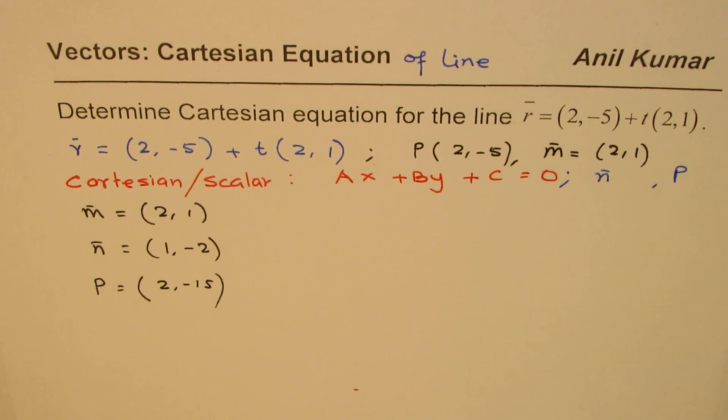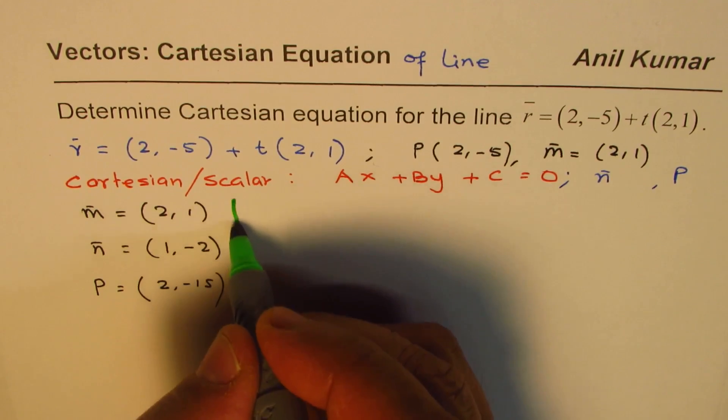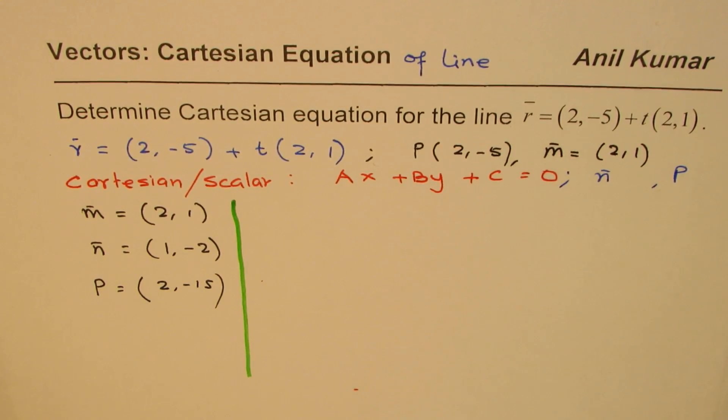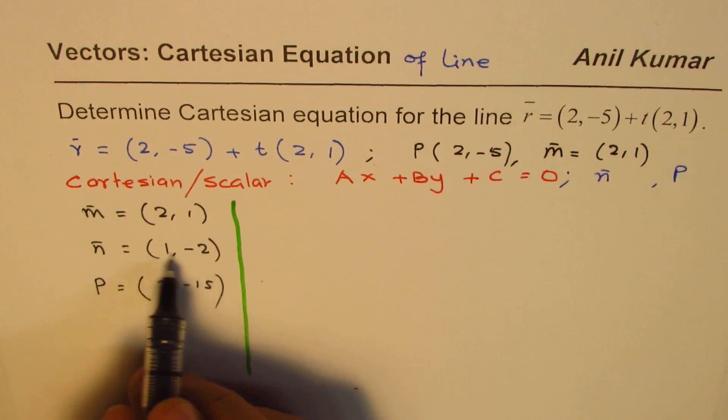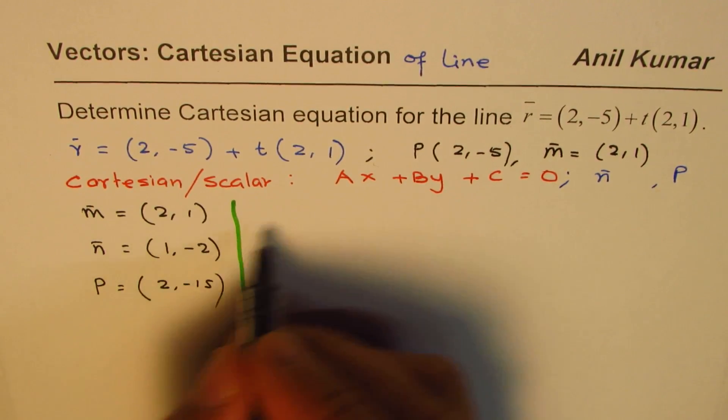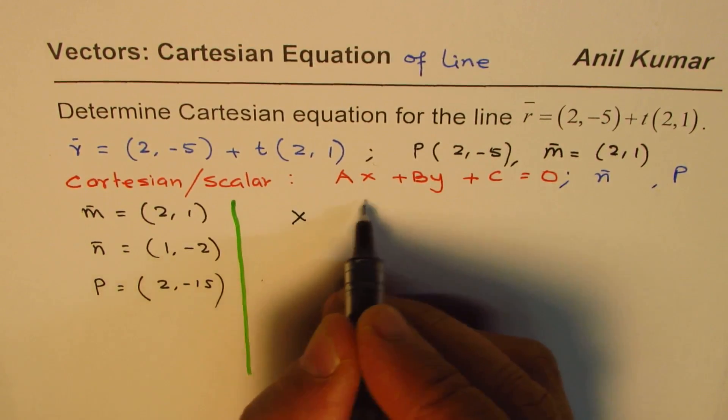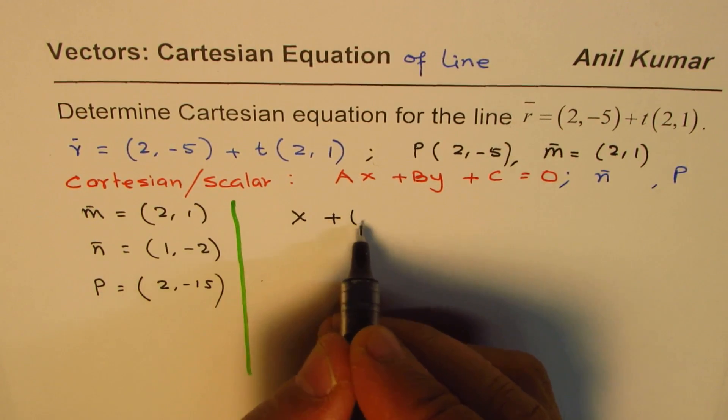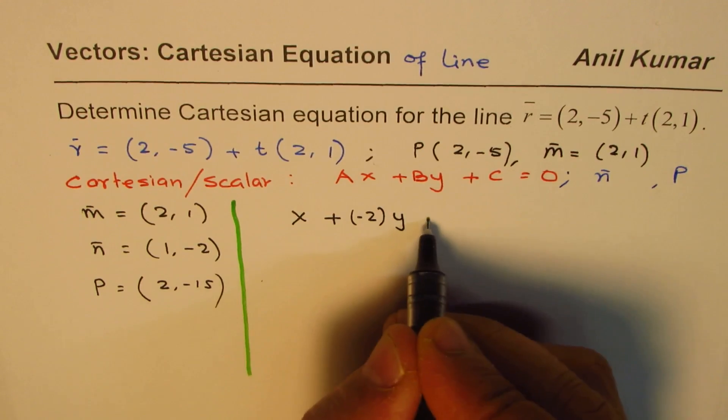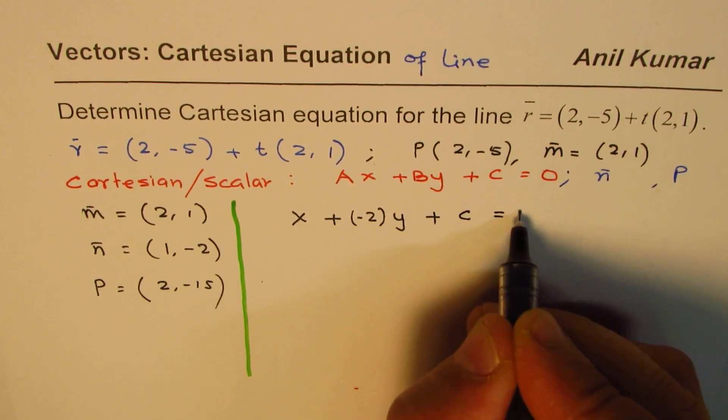So we'll use all this information to write down our equation, which is right there. So A and B are the normals. So we can write this as 1 for A. So it is x plus B is -2. So that means -2y plus C equals 0.